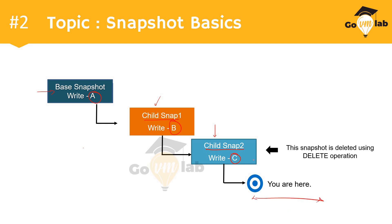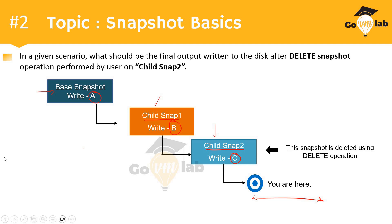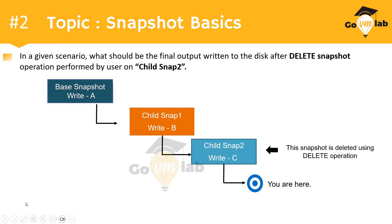The user is currently in this state — child snap 2 with value C. The question for this scenario is: what should be the final output written to the base disk after a delete snapshot operation is performed by the user on child snap 2?